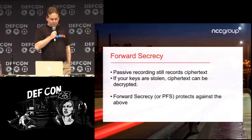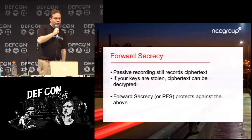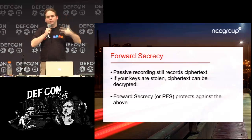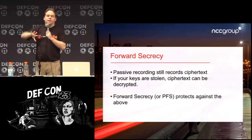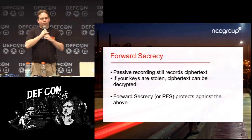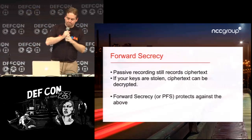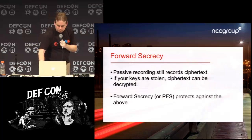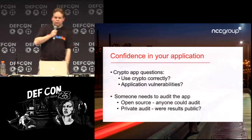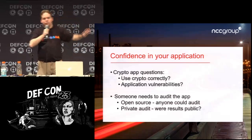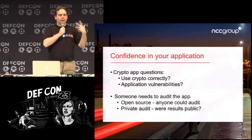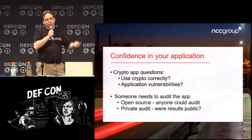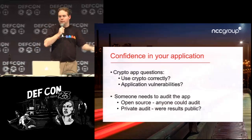The way to prevent decryption of previously recorded traffic is forward secrecy. There's crypto mumbo jumbo involved, but the idea is you stack another temporary key on top of the key you're already using. Since the attacker was passive and not active, they weren't able to man-in-the-middle that extra key, so they won't be able to read the stored data even after stealing your key. This is sometimes also called perfect forward secrecy — for this talk, they're the same thing.